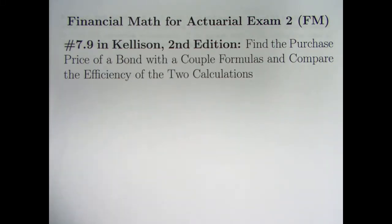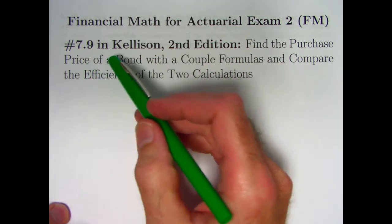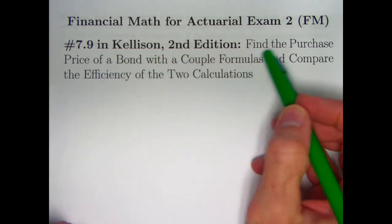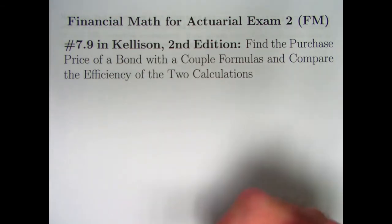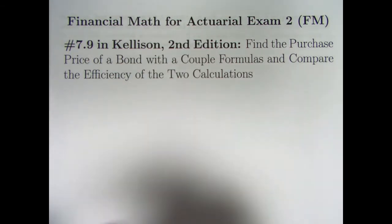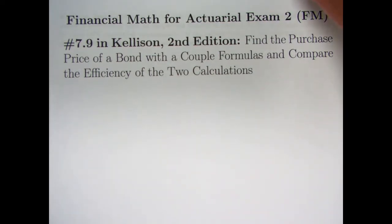Recently we've been doing a lot of bond price problems using the big four formula, so to speak, for bond prices. That kind of thing is going to continue in this video and a few more videos to come with a focus on deciding which formula to use in a given situation, which formula might be best. I'm going to start by illustrating this for problem 7.9 in the second edition of Kelsen. We'll be finding the purchase price of a bond with a couple formulas. We're going to compare the efficiency of the two calculations. It's not stated in the problem statement itself that you should use two formulas, but I will want to do that here to illustrate it.